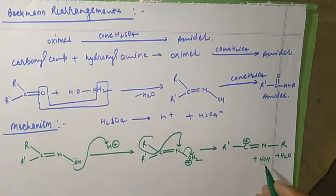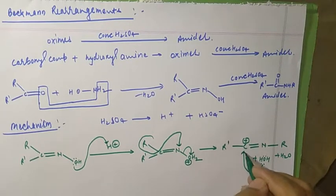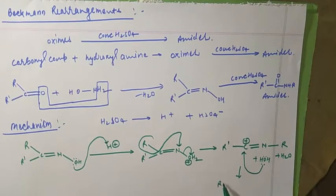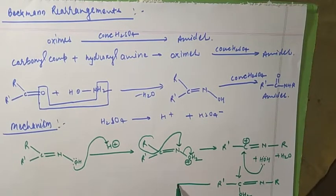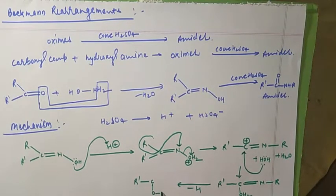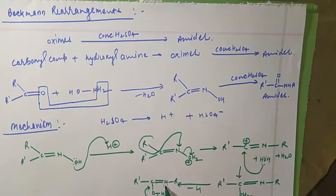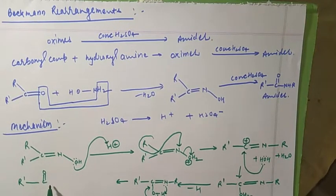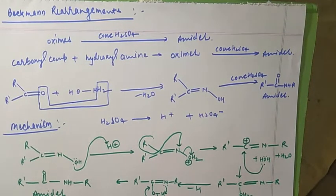The lone pair electron of water attacks the electrophilic carbon, giving an intermediate R'-C(OH2+)=N-R. After losing H+ (minus H), we get R'-C(OH)=N-R. Then this bond shifts and the lone pair on nitrogen assists, giving the final product: R'-C(=O)-NH-R, which is the amide. This is the first example of Beckman rearrangement.